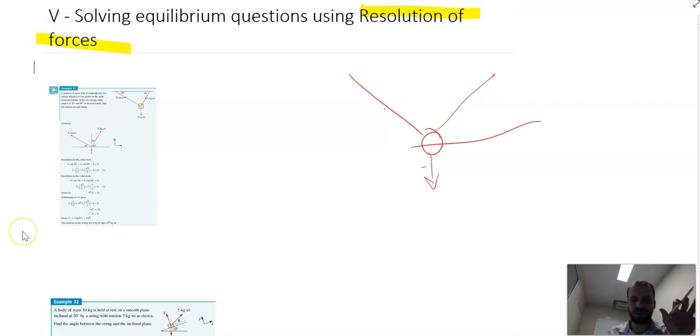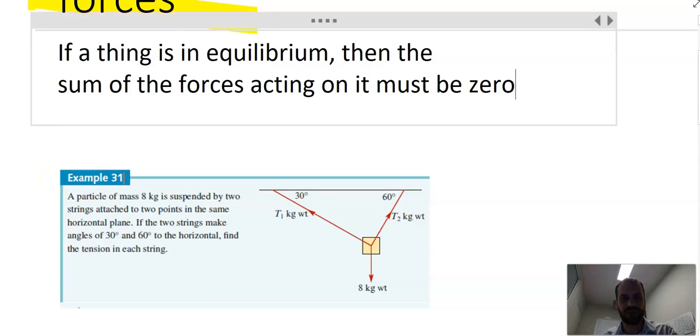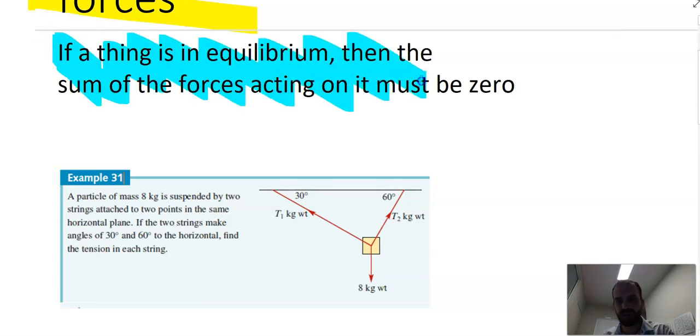I'm going to do a question here that could be solved using triangle of forces but we're not going to use that. We're going to use resolution of forces instead. The important thing is if a thing is in equilibrium, if it's not moving, then the sum of the forces acting on it must be zero. That means that the i components will be equal and the j components will be equal.